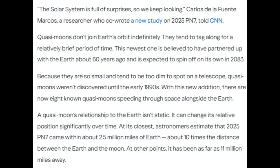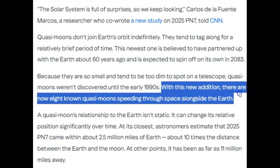The solar system is full of surprises, and we have new 2025 PN7. That is right, they call it a quasi-moon because it's really not hooked to Earth's gravitational field. It's following Earth in its same orbit. What this says now, this will make number eight. And let me see, with this new addition, there are now eight quasi-moons speeding through space alongside Earth.